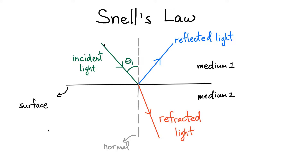Here's a summary of Snell's Law. I'm going to consider an incident beam here — an incident light ray — and it makes some angle theta 1 with respect to the normal. I've drawn this gray line here, which is a normal line. Normal simply means that it's perpendicular to the surface, which I've drawn here in black. So my incident light ray is coming in and it makes some angle theta 1 with respect to the normal.